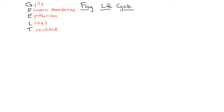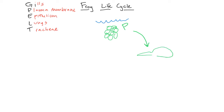A frog starts as a cluster of eggs in water. How do eggs get their oxygen? Through the plasma membrane. Then they hatch into tadpoles. How do tadpoles get oxygen? Gills.